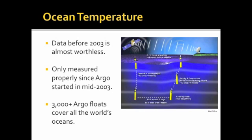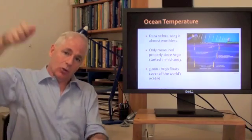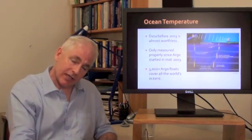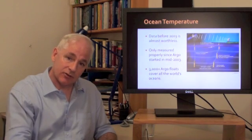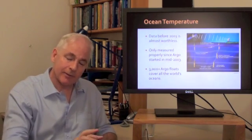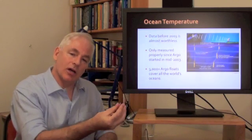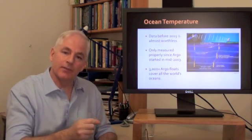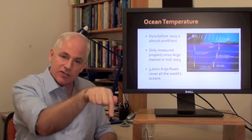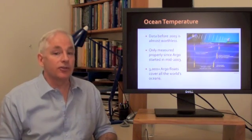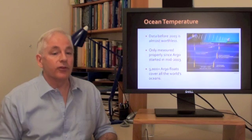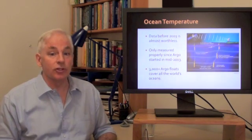The Argo program went operational in mid-2003. In Argo, there are 3,000 floats that go around the world's oceans constantly. And every 10 days, each float, and a float is about 2 metres tall, it dives, duck dives down to about 2,000 metres, spends a few days down there to match up the temperatures to equilibrate, and then it slowly rises to the surface, measuring the temperature as it comes up, and radios the results back via satellite to headquarters. So, since mid-2003, for the first time, we've had a handle on what ocean temperatures are doing.